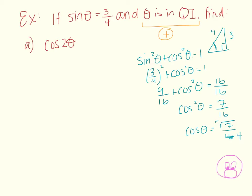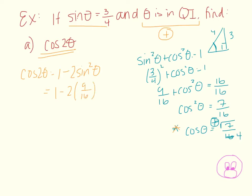When we take the square root we get plus or minus, but because we're in quadrant one the value is positive. Now, for cosine of two theta, we can use the identity cosine two theta equals one minus two sine squared theta. Plugging in: one minus two times (nine sixteenths) equals one minus eighteen sixteenths, which is sixteen sixteenths minus eighteen sixteenths, giving negative two sixteenths, which reduces to negative one eighth. So cosine of two theta equals negative one eighth.